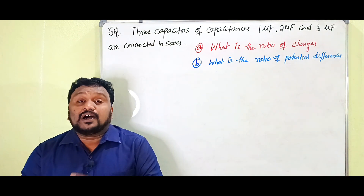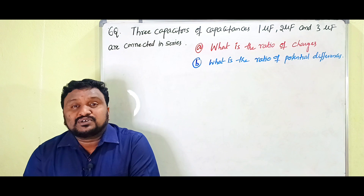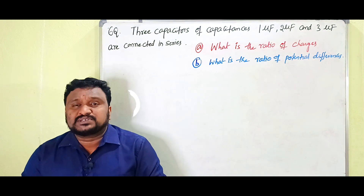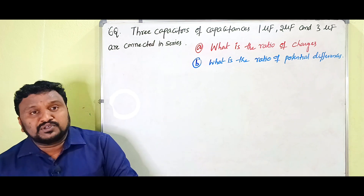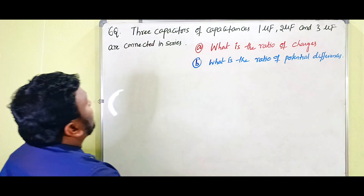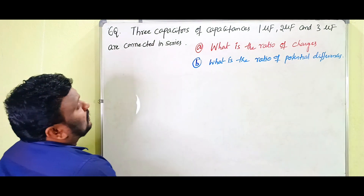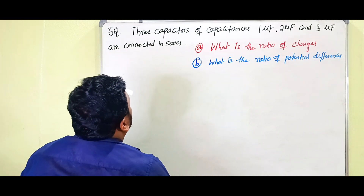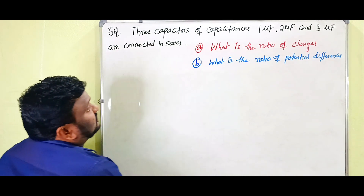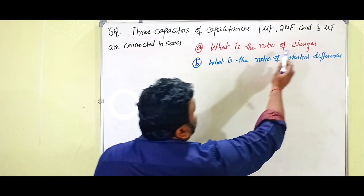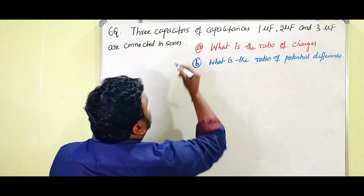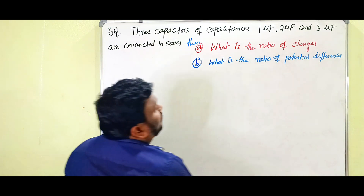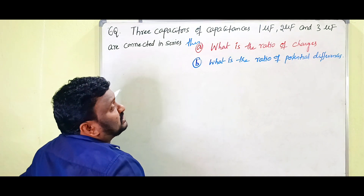This question repeats a lot in IPE exams. Three capacitors of capacitances 1 microfarad, 2 microfarad, and 3 microfarad are connected in series. What is the ratio of charges, and what is the ratio of potential differences?